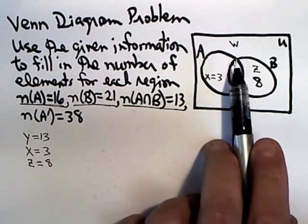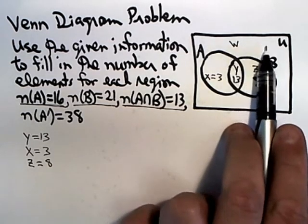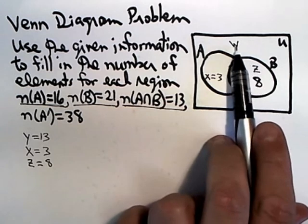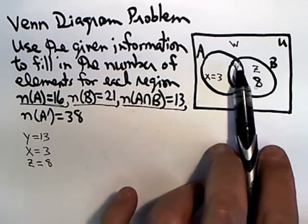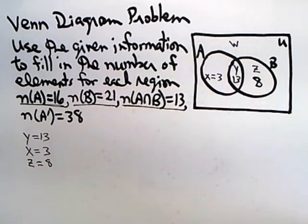And finally, we want to find W. W is the number of elements outside of either circle—outside of, excuse me—elements that aren't in A or B.